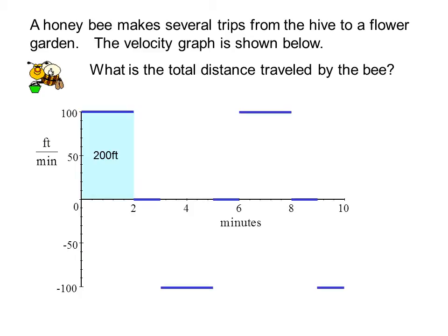So the bee travels 200 feet from the hive towards the flower garden, stops for a short time, then travels 200 feet back, stops at the hive for a short time, travels 200 feet back to the garden, stays at the garden for a short time collecting honey, makes it halfway back and then splat, got hit by a windshield or something.